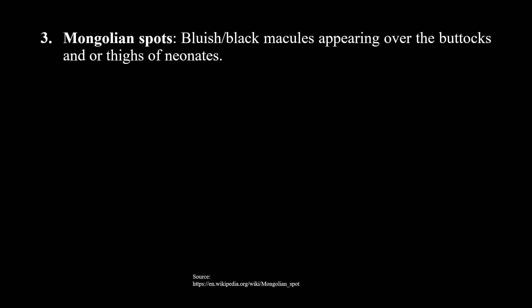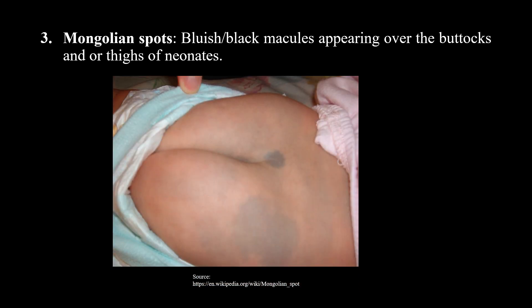Next are Mongolian spots. Mongolian spots are blue or black macules appearing over the buttocks area of newborns. You can see this bluish color macule. It is normal - not abnormal. You can see it with early child development and it is a normal finding.